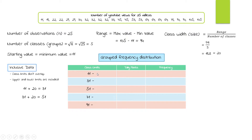To calculate the upper limits, we take the next lower limit minus 1. So 31 minus 1 gives the first upper limit of 30, giving us the range 11–30. Then 51 minus 1 is 50, giving 31–50, and so on: 51–70, 71–90. For the last upper limit, we notice that 90 plus 20 gives 110, so the last class is 91–110.